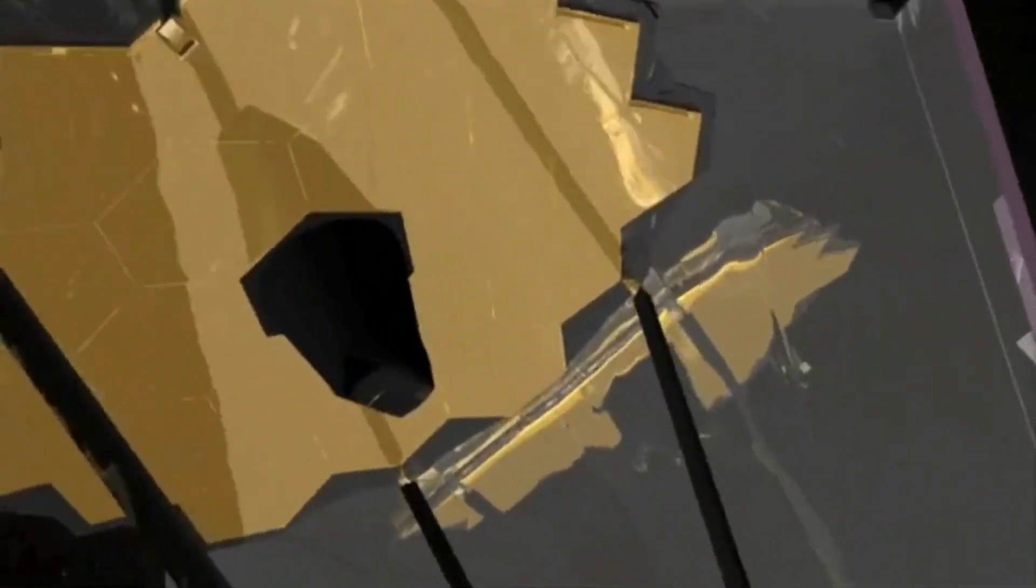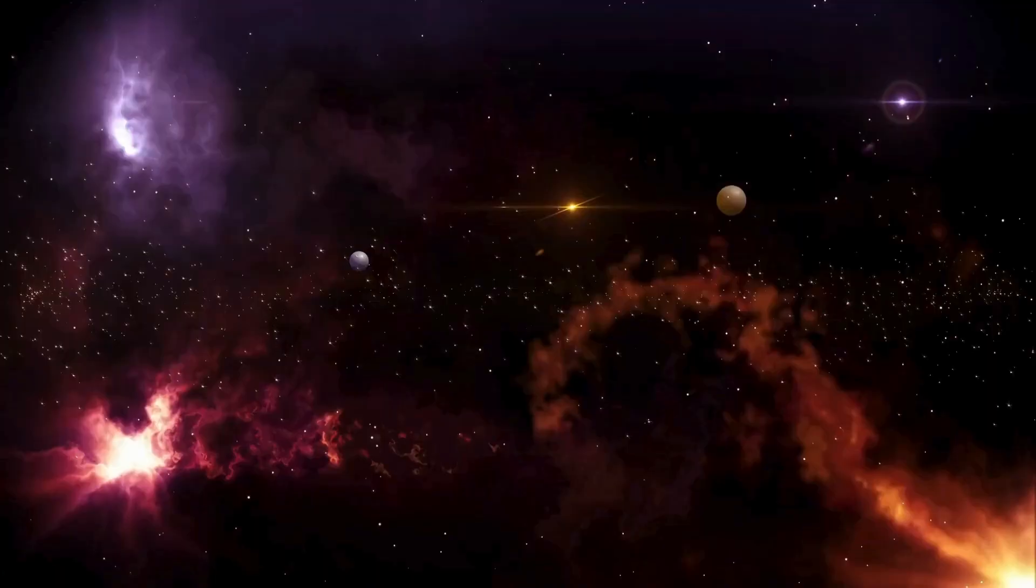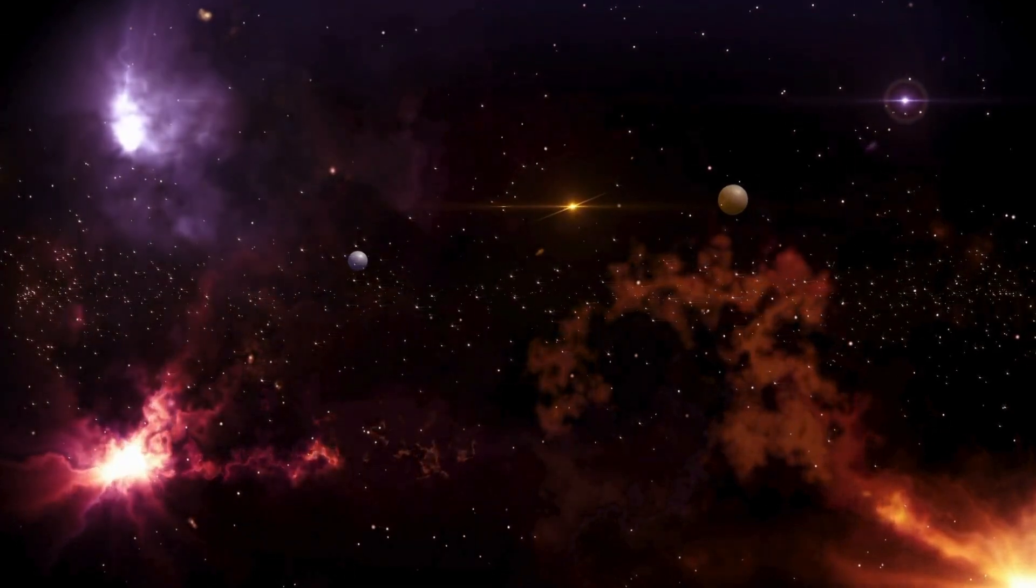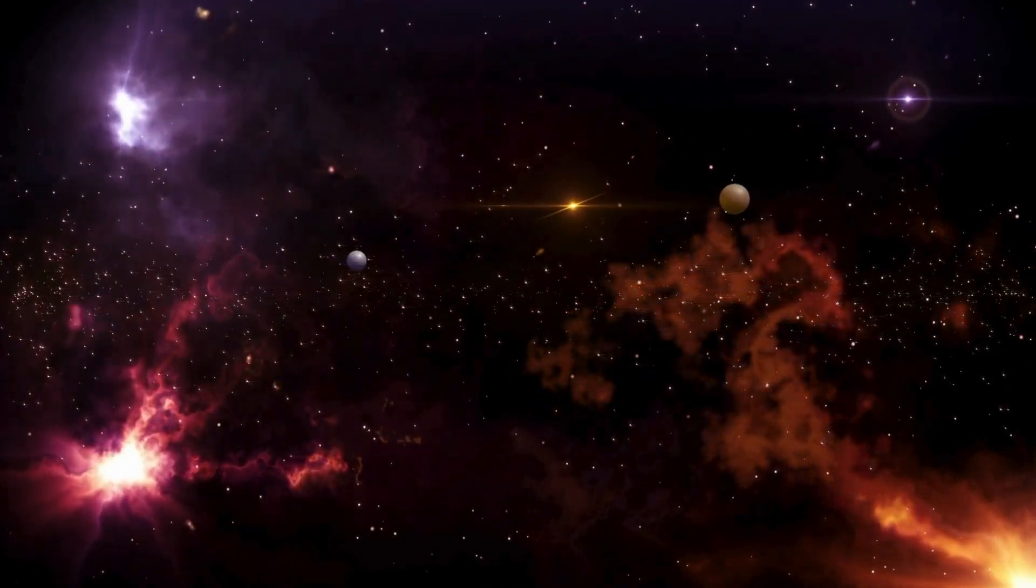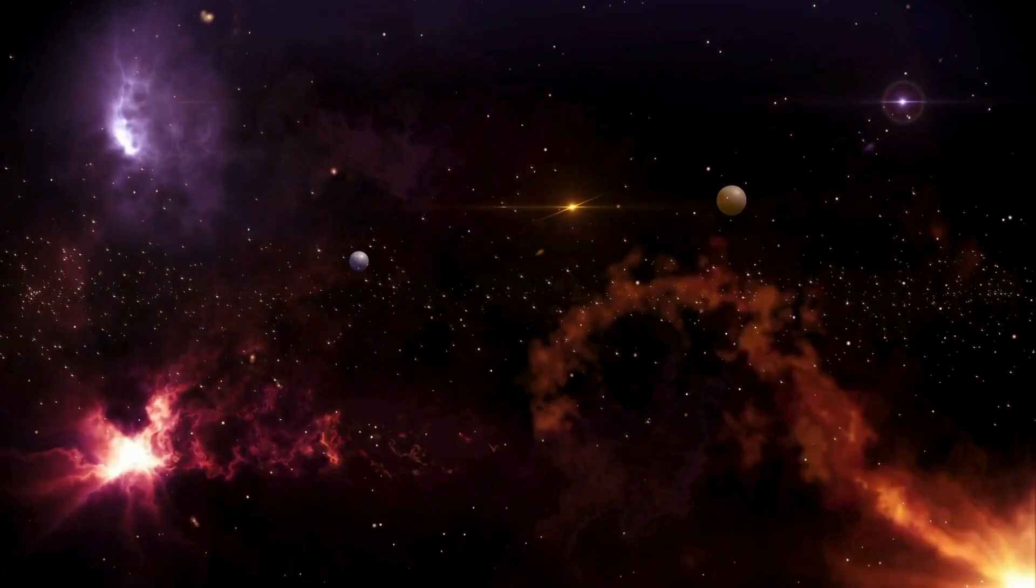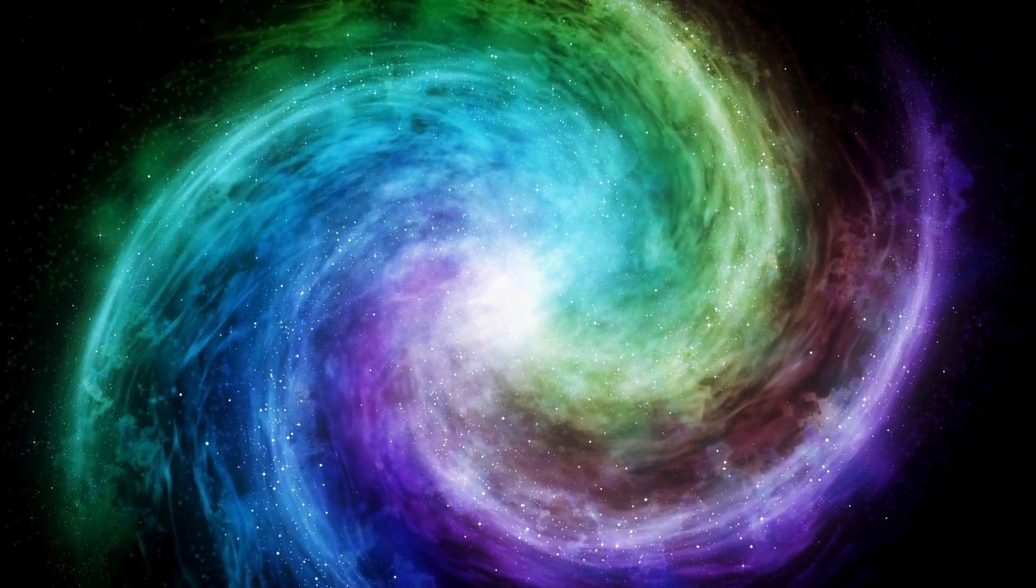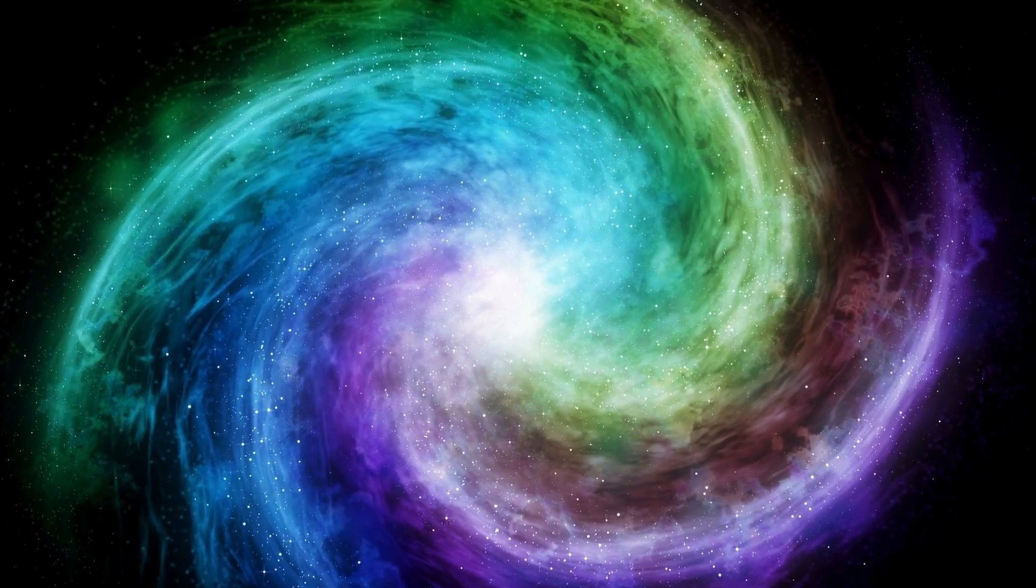The James Webb Telescope has uncovered the clearest picture of Proxima b in history, revealing shocking insights into a possibly habitable exoplanet. It obliges us as we set out on a journey through space to uncover the secrets of Proxima b and find out whether it could be the next Earth.